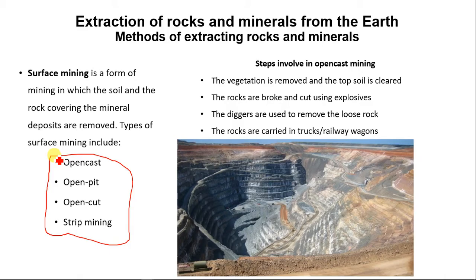The steps involved in open cast mining: first, the vegetation is removed and the topsoil is cleared. Take note that this leads to destruction of habitats and loss of biodiversity. In case you are asked about the impact of extraction of minerals, that is one — because clearing the vegetation and topsoil exposes the soil to erosion and reduces the biodiversity within that area.